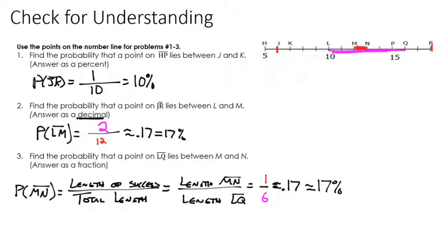I hope this video helped. Just remember that we're basically just slightly changing our definition of probability to fit areas and number lines instead of successes and total outcomes.